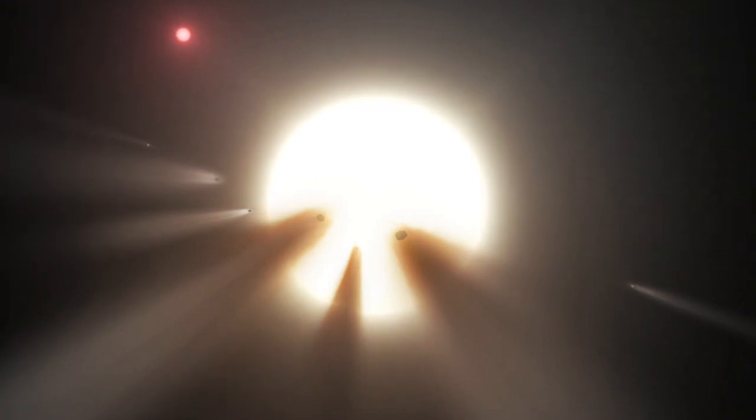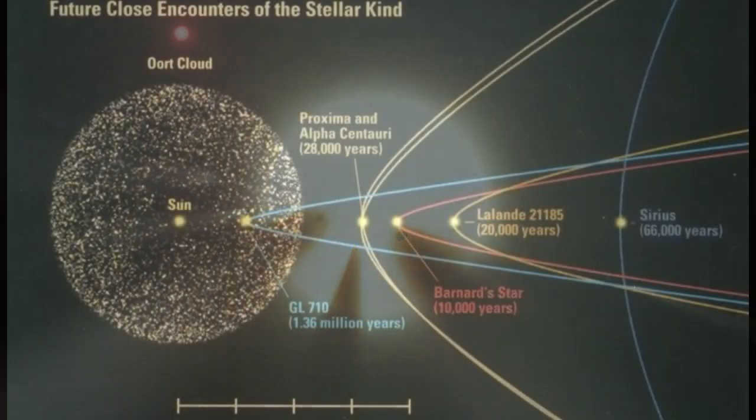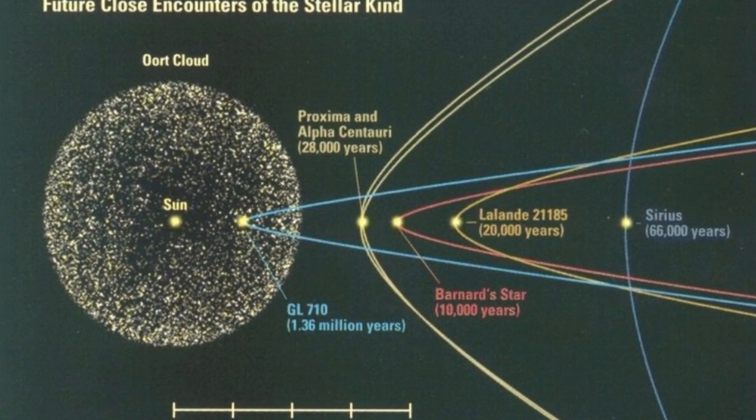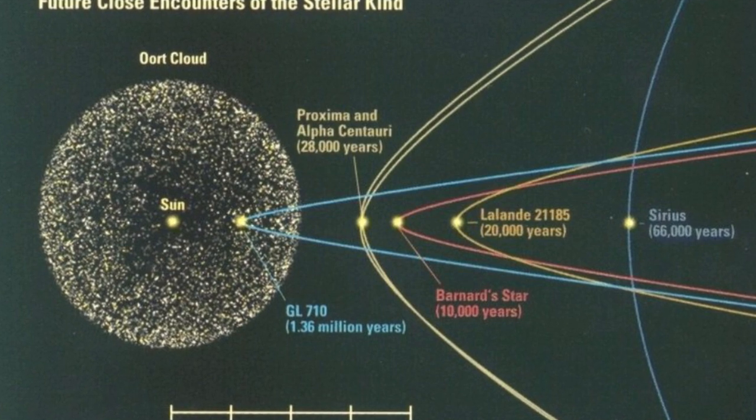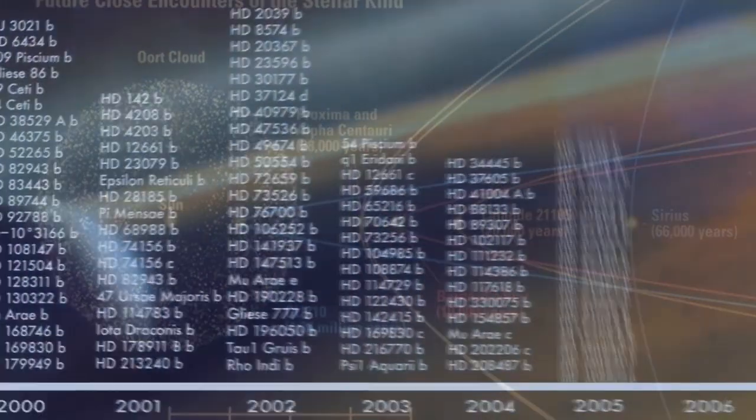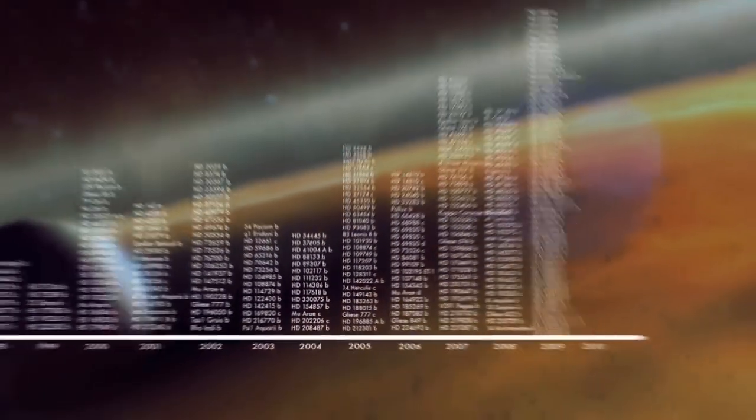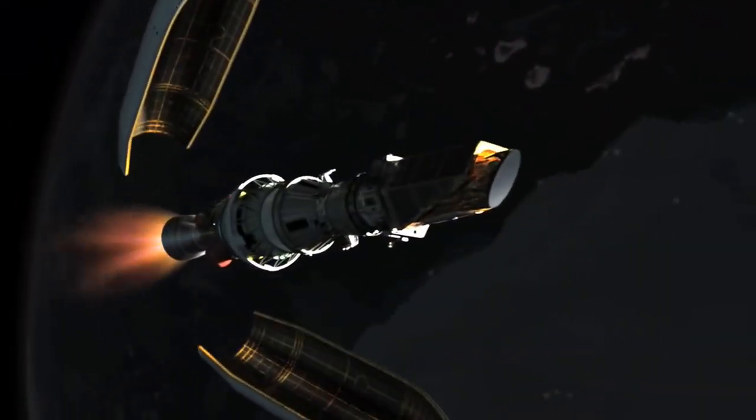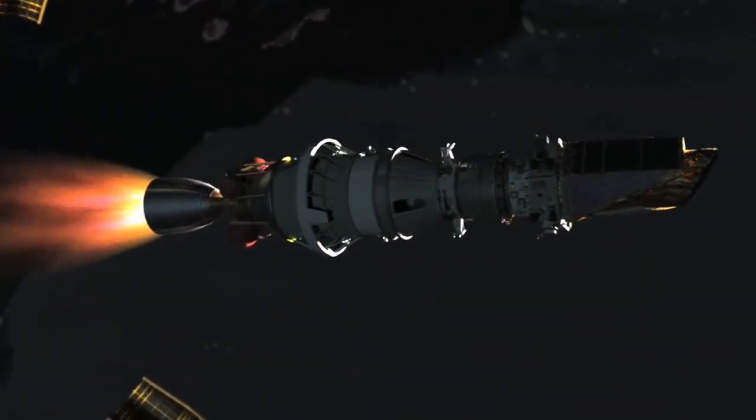It's been known for some time that Gliese 710 will eventually pass through our solar system as it careens through the universe, potentially causing a lot of damage to anything unlucky enough to be in its way. Now, new calculations using the most accurate map of the stars ever created have revealed that Gliese 710 might arrive much sooner than we thought.